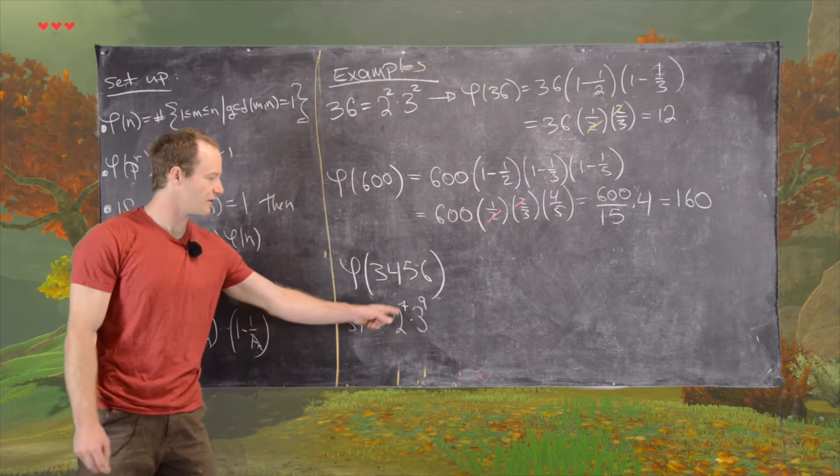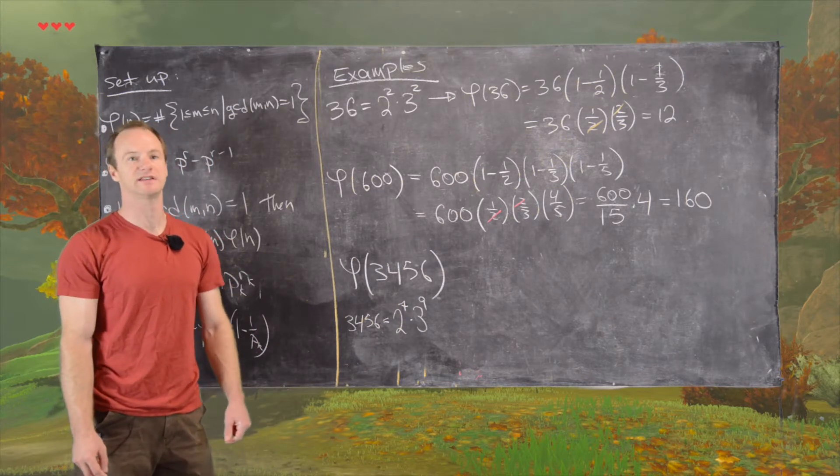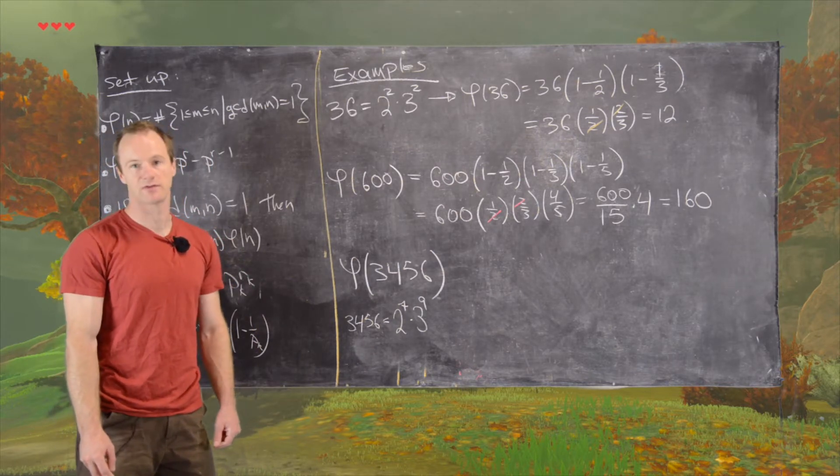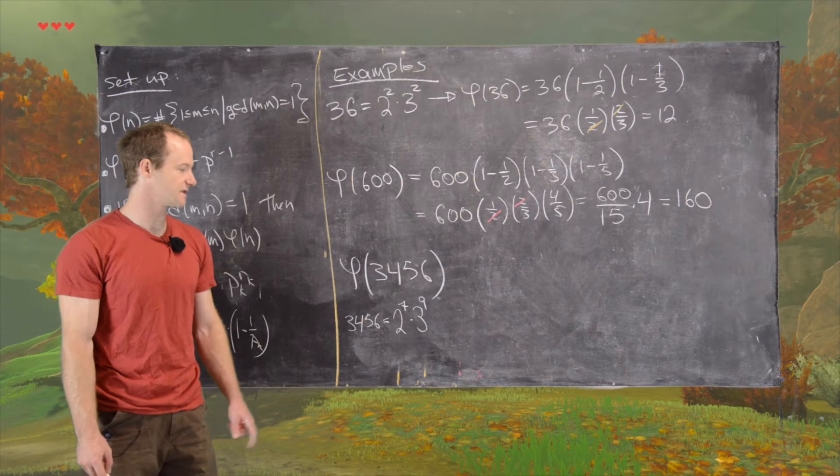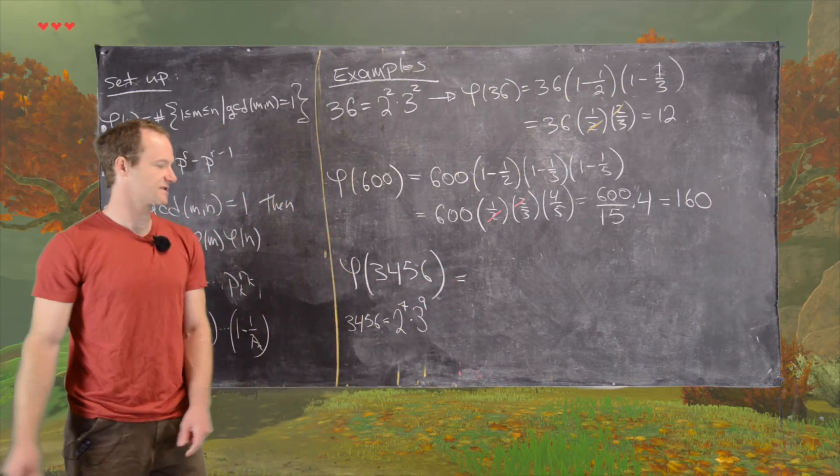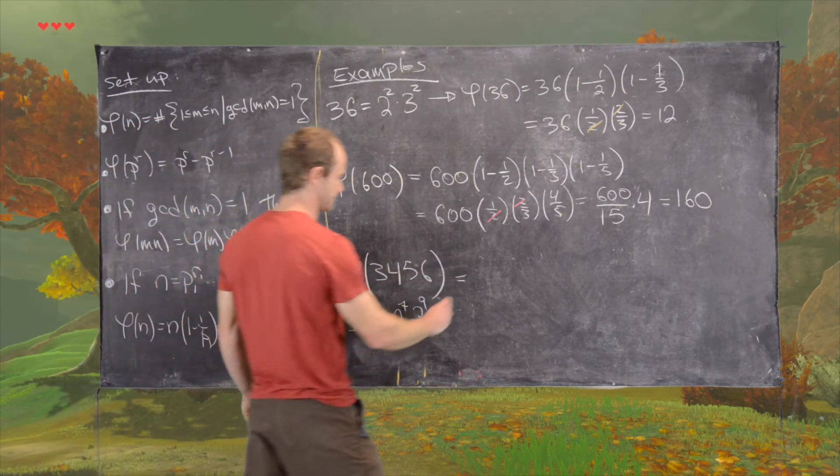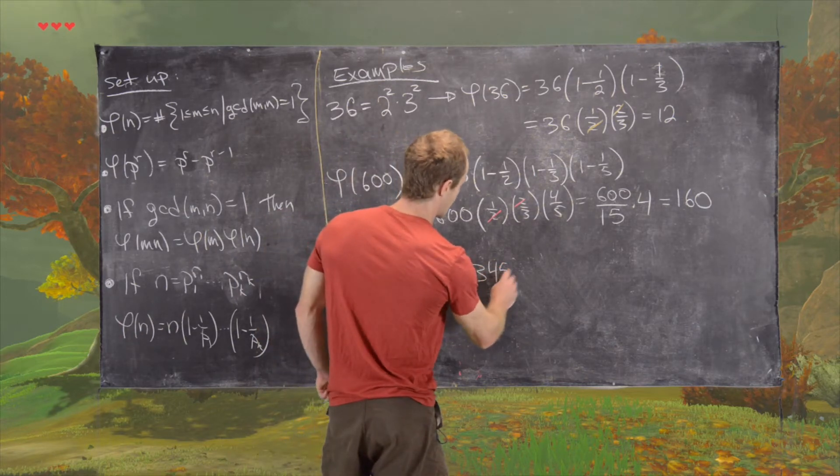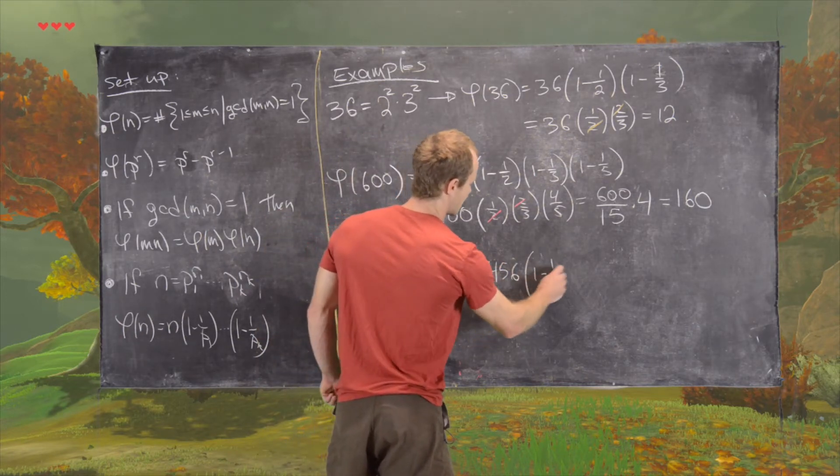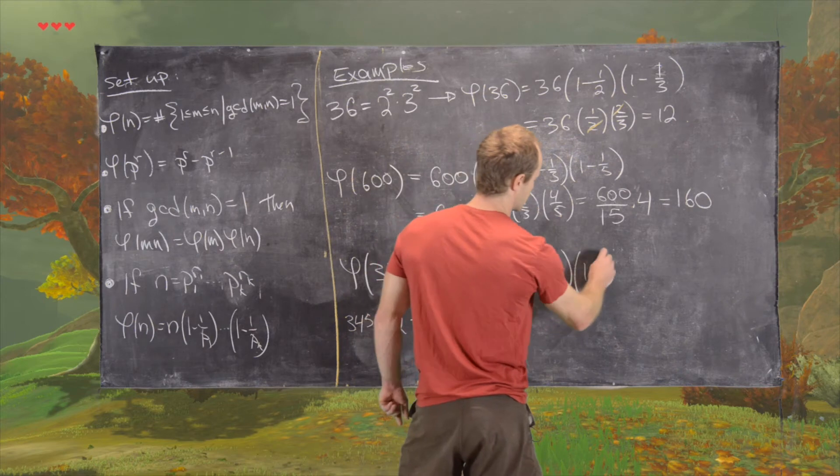So like I said before, we don't need to know these exponents, we only need to know the primes dividing 3456. But we'll write the prime factorization in that case. So here we have this is 3456 times 1 minus half times 1 minus third.